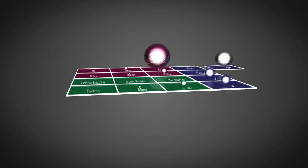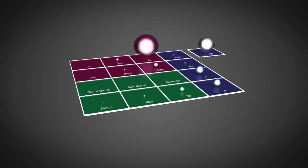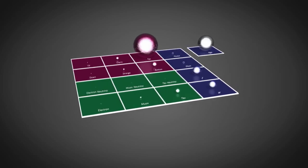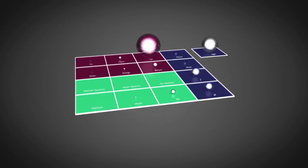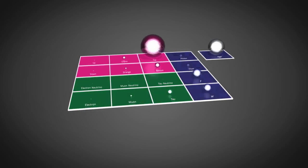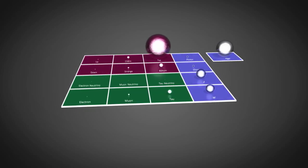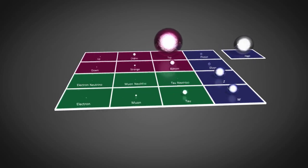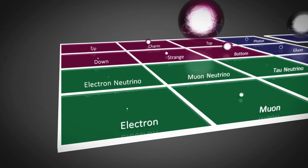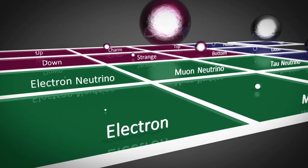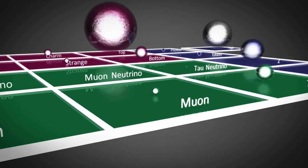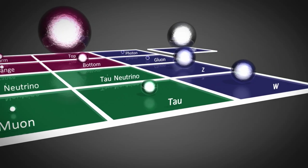This is the standard model of elementary particles that make up the known universe. They are divided into groups called the leptons, the quarks, and the gauge bosons. The leptons consist of the atomic electron and its two larger cousins, the muon and the tau, as well as three types of neutrino.